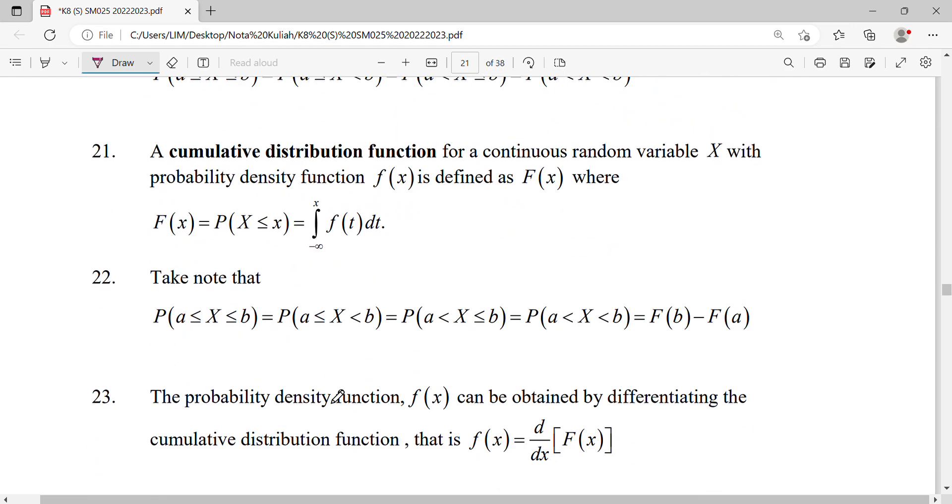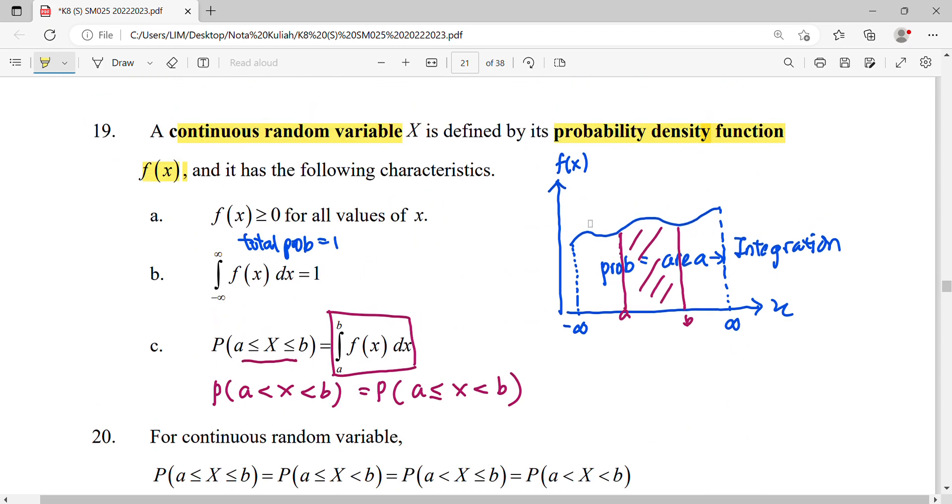When we accumulate—bila kita longkupkan—we call it the cumulative distribution function, denoted as capital F. We accumulate its probability by integrating interval by interval. We're accumulating the area, still using integration. For continuous random variables, we use a lot of integration because probability is represented by the area under the graph.